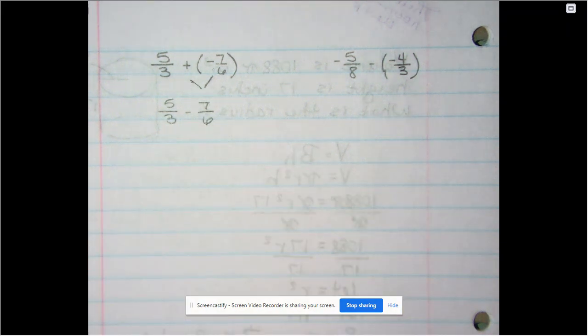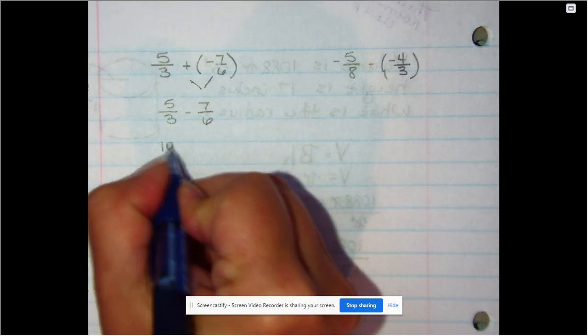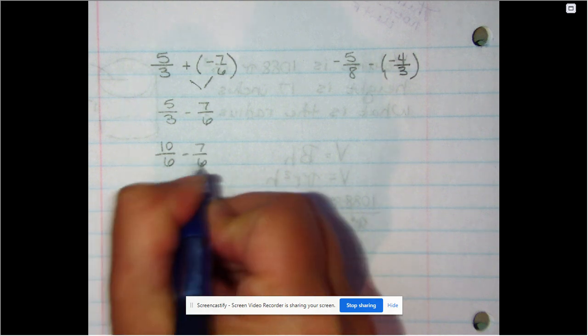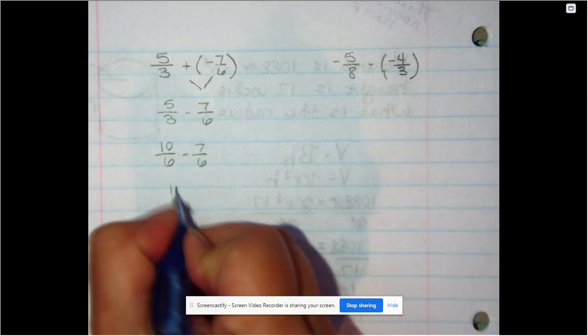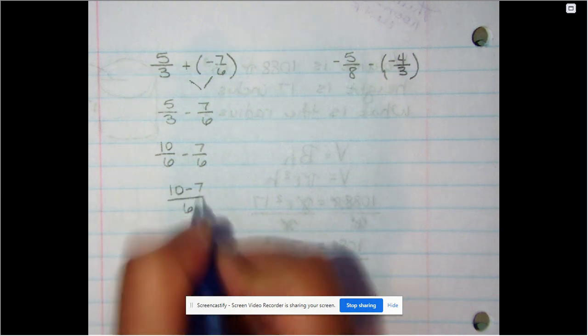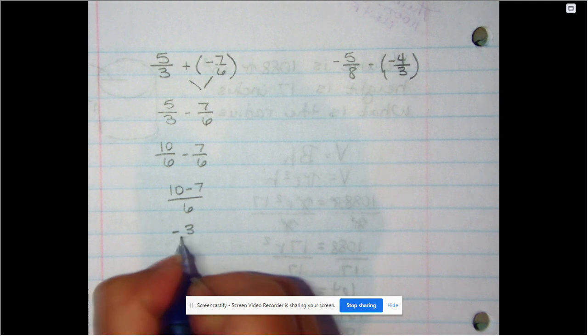You also need common denominators since you're adding and subtracting. So this is ten-sixths minus seven-sixths. Now they have the same denominator, ten minus seven, negative three-sixths.